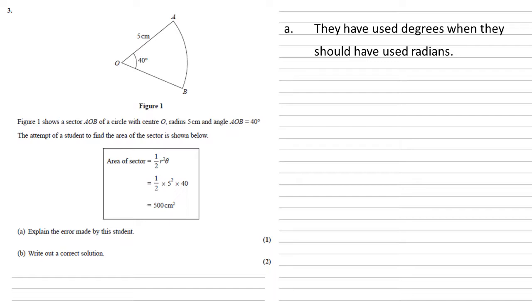We need now to write out a correct solution. So as we're in degrees, we'll use our normal formula for degrees, which is the center angle 40 over 360 times by the area of a circle, so pi R squared.